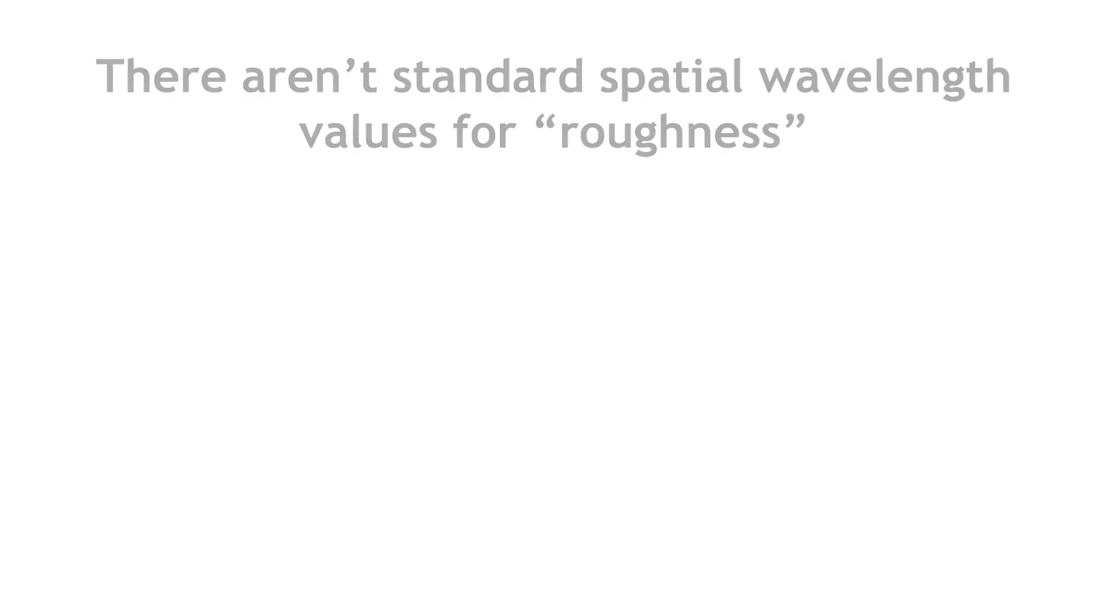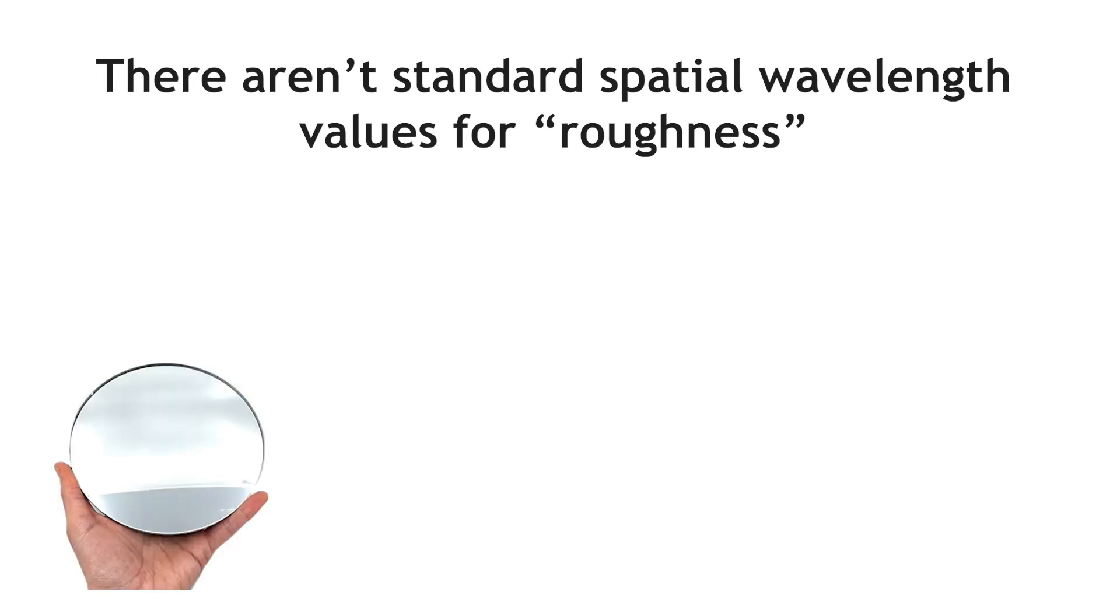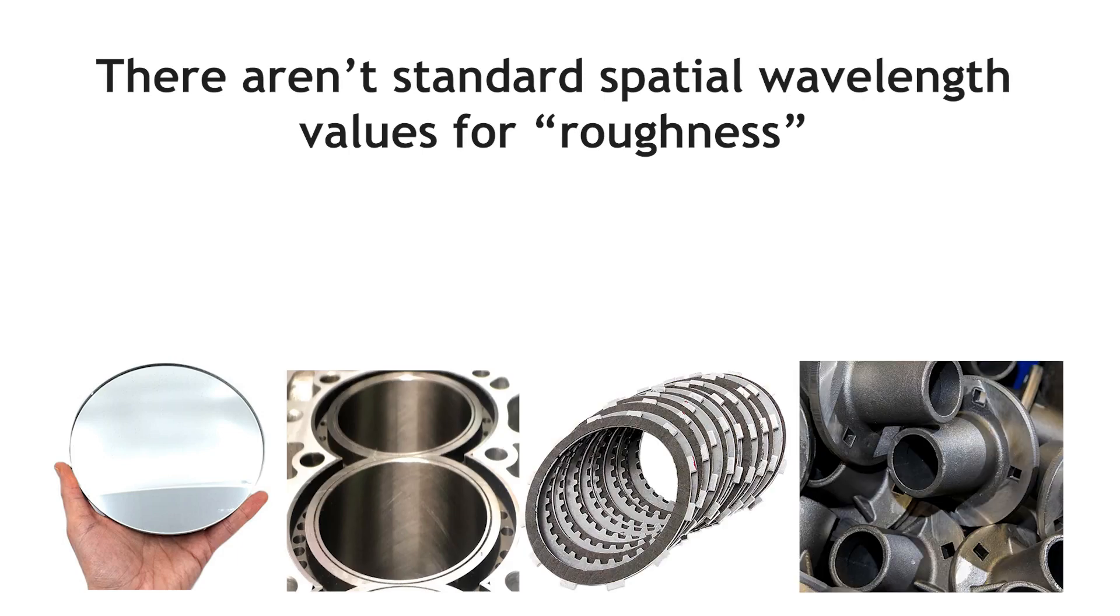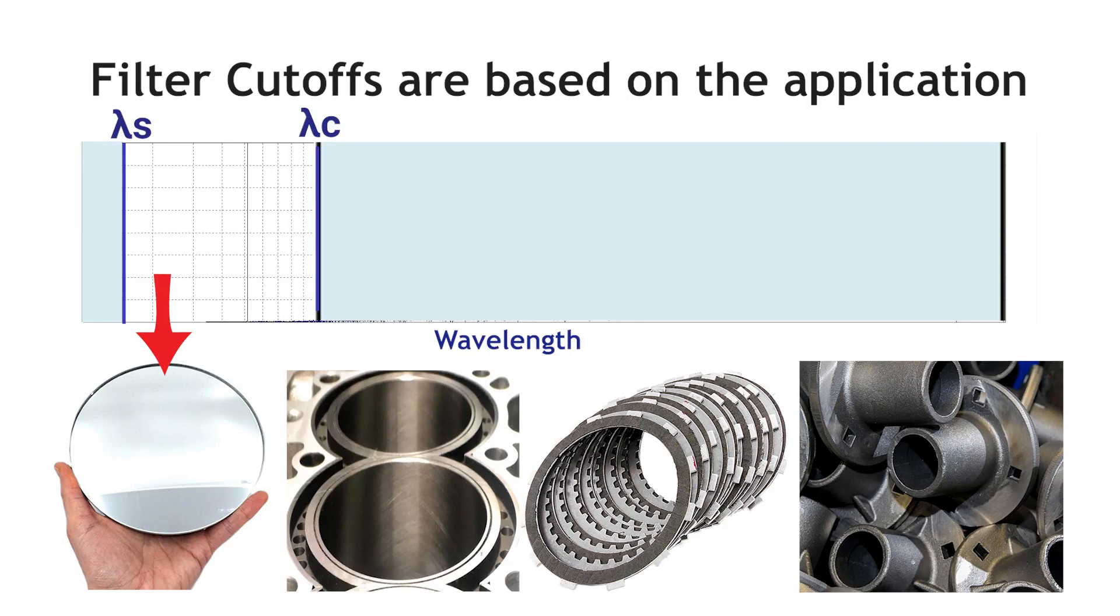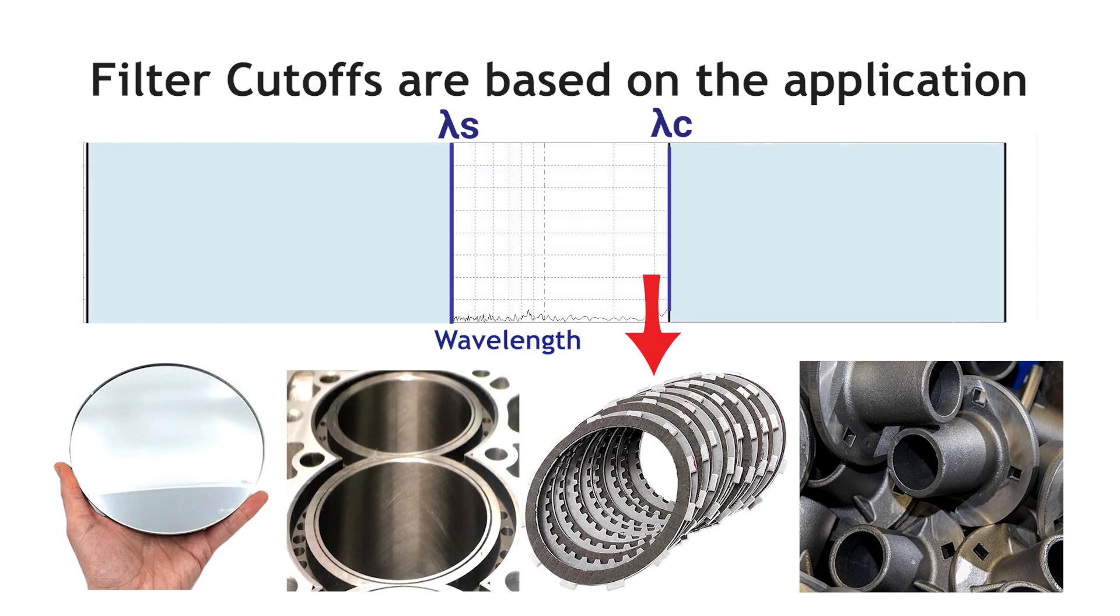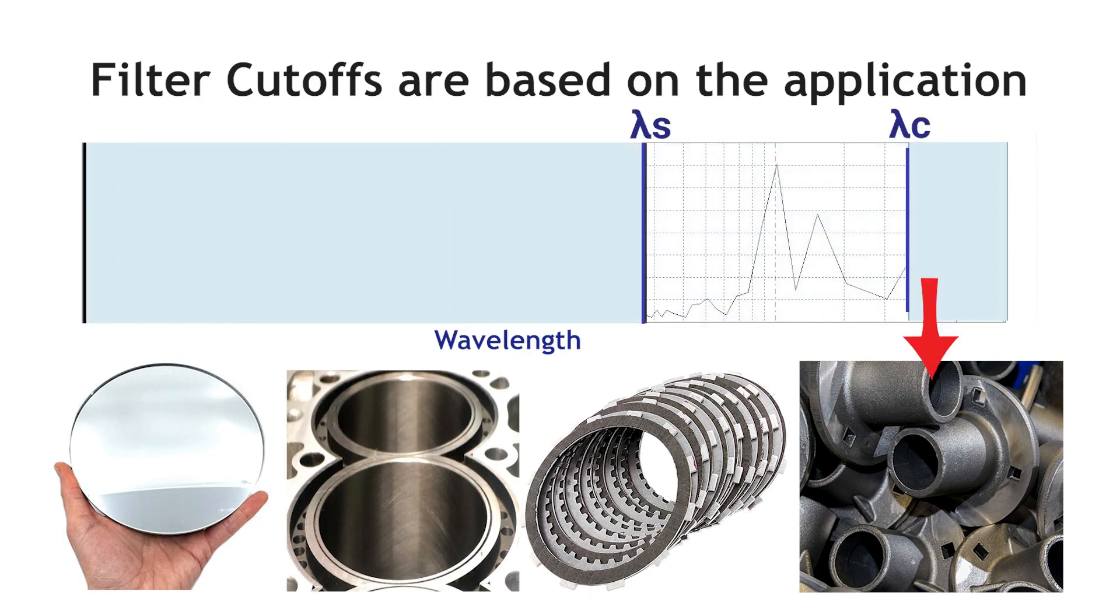There aren't standard values for which spatial wavelengths are called roughness. What is roughness for an optical surface may be imperceivable for a metal component. The values we choose for lambda s and lambda c should be chosen based on the application.